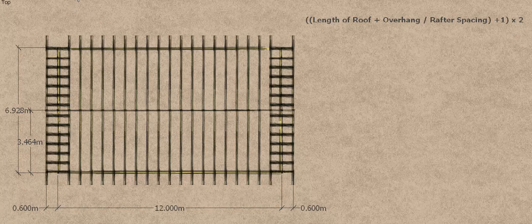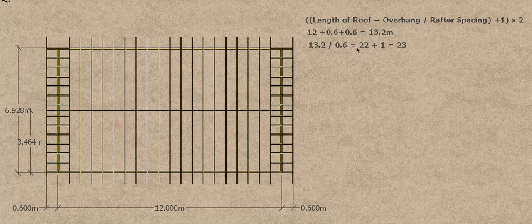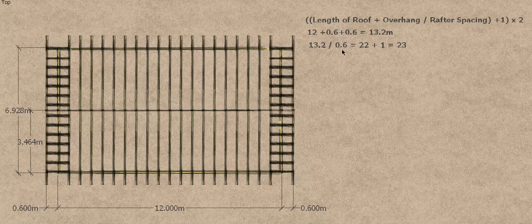Our roof is 12 metres long and has a 600mm overhang on both ends. So 12 metres plus 0.6 plus 0.6 gives us 13.2 metres total length. We then divide 13.2 by our spacing of 0.6 (600mm), which gives us 22 spaces between our rafters. With 22 spaces, we need to put an extra rafter on the end, so we always add one. That gives us 23 rafters in total for one side of the roof.